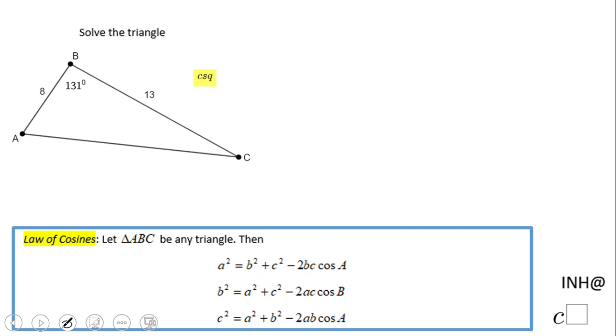You see here three forms of the law of cosines. Which one am I going to use? We have side c, which is opposite angle C, and side a. We need to find b, so we're going to use this form: b² equals a² plus c² minus 2ac cosine of B.